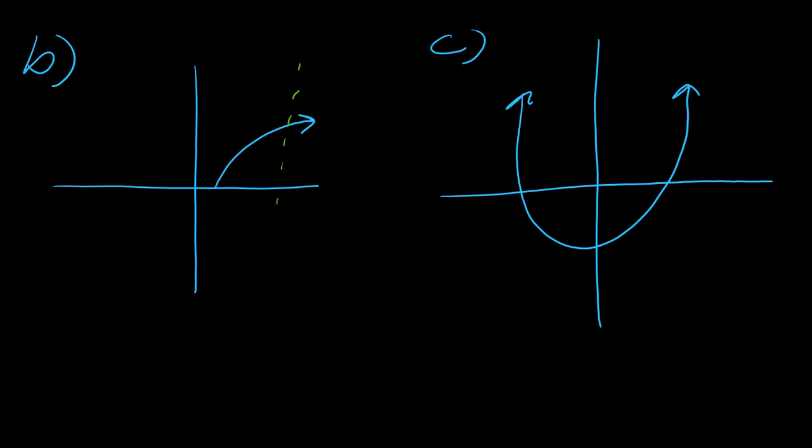So for B, so it passes the vertical line test, so we're good to go there. And then if I do the horizontal line test, it passes there, so this is indeed a one-to-one function. So this one is good to go.